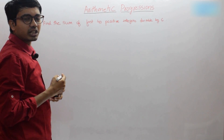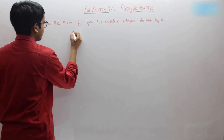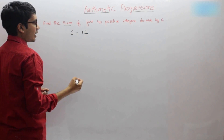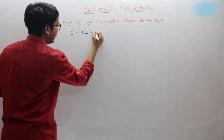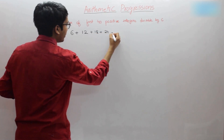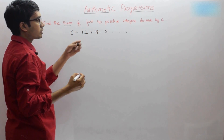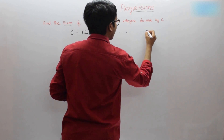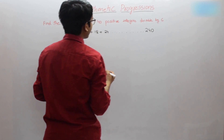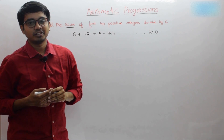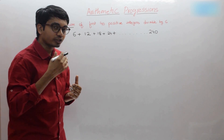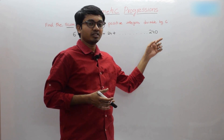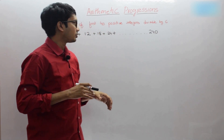What are the first positive integers divisible by 6? The first is 6, the second is 12, then 18, 24 — all these numbers are divisible by 6. What is the last number, that is the fortieth positive integer divisible by 6? It is 240, because 6 into 40 is 240. He is asking the sum of first 40 positive integers divisible by 6, so the last number — the fortieth — is 240. If you divide 240 by 6, you get 40, confirming it is the fortieth term.